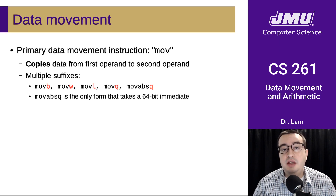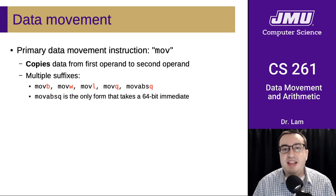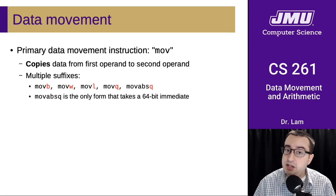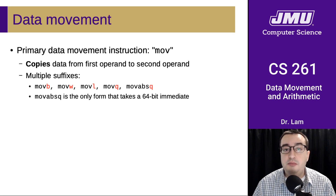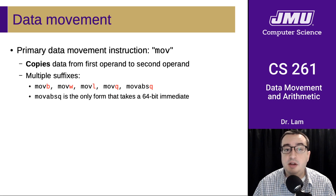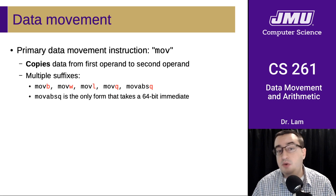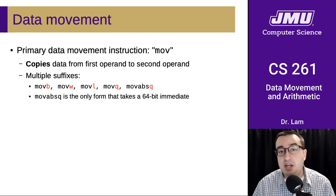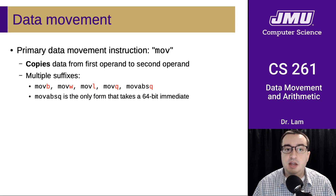Our primary data movement instruction, MOV, is actually a family of instructions — all valid. MOVB moves a byte, MOVW moves a word (16 bits), MOVL moves a long word (32 bits), and MOVQ and MOVABSQ are both instructions that move 64 bits. MOVABSQ is actually the only form that takes a 64-bit immediate, which is one of those weird corner cases in x86.